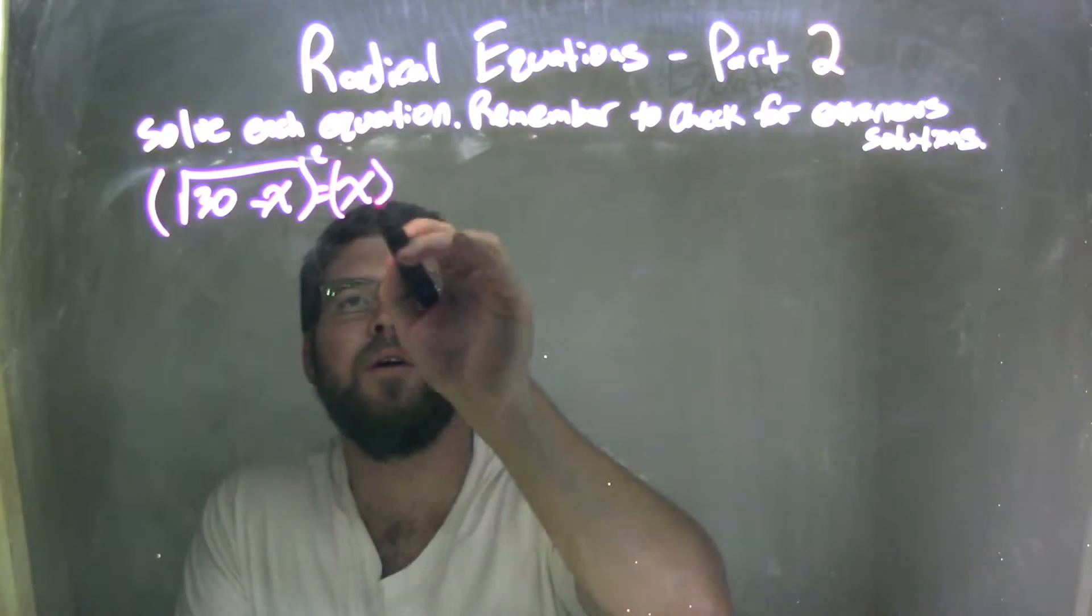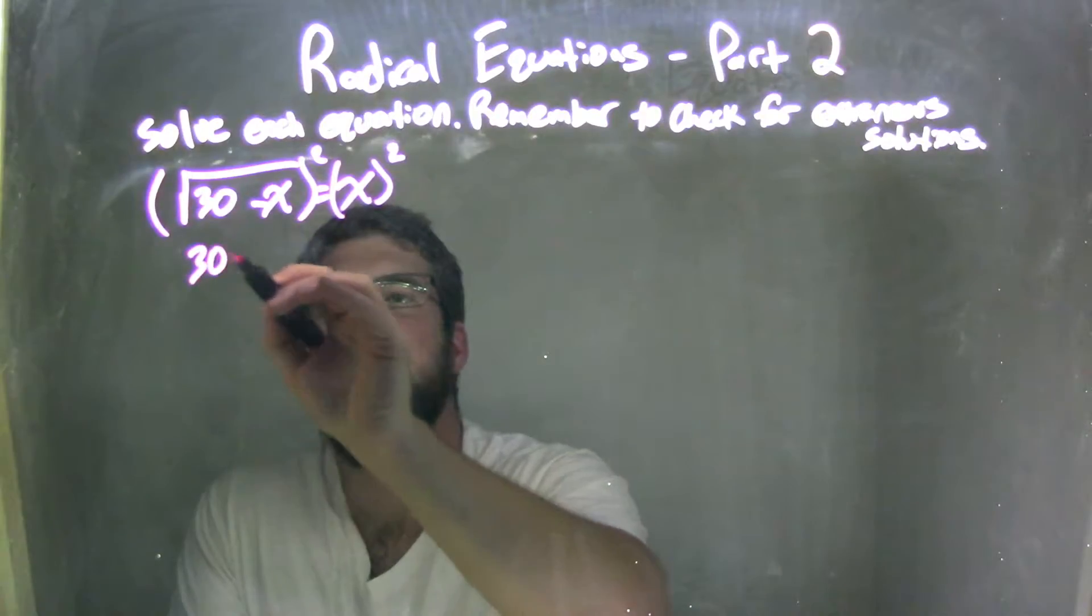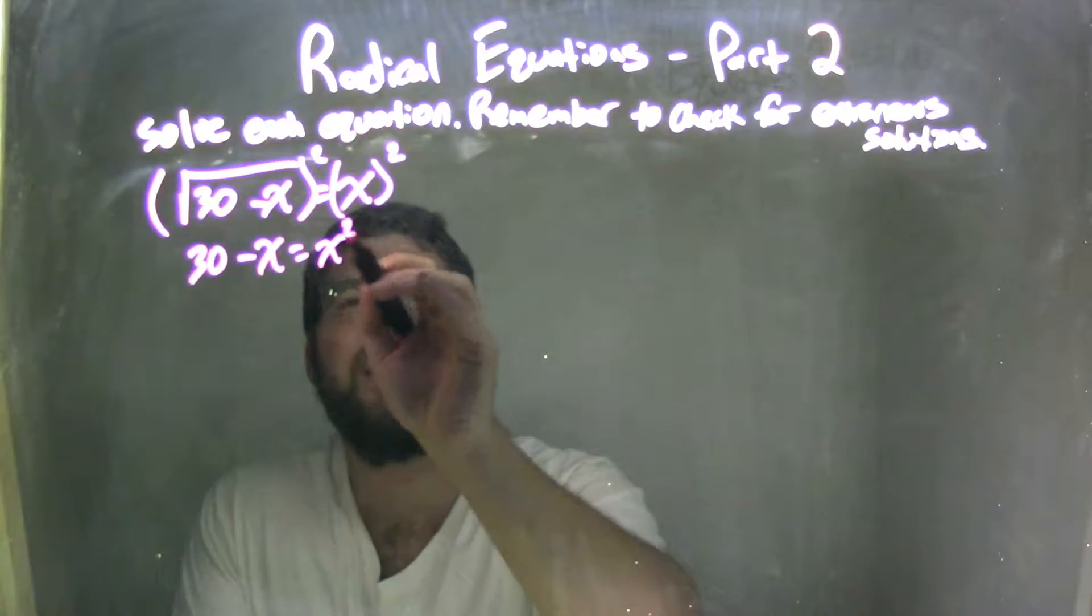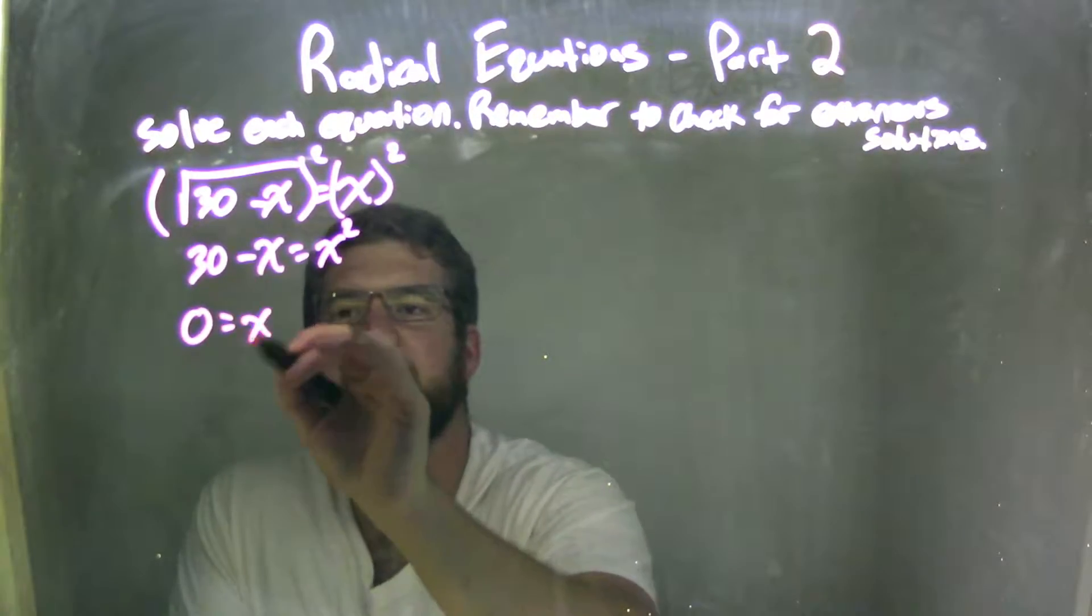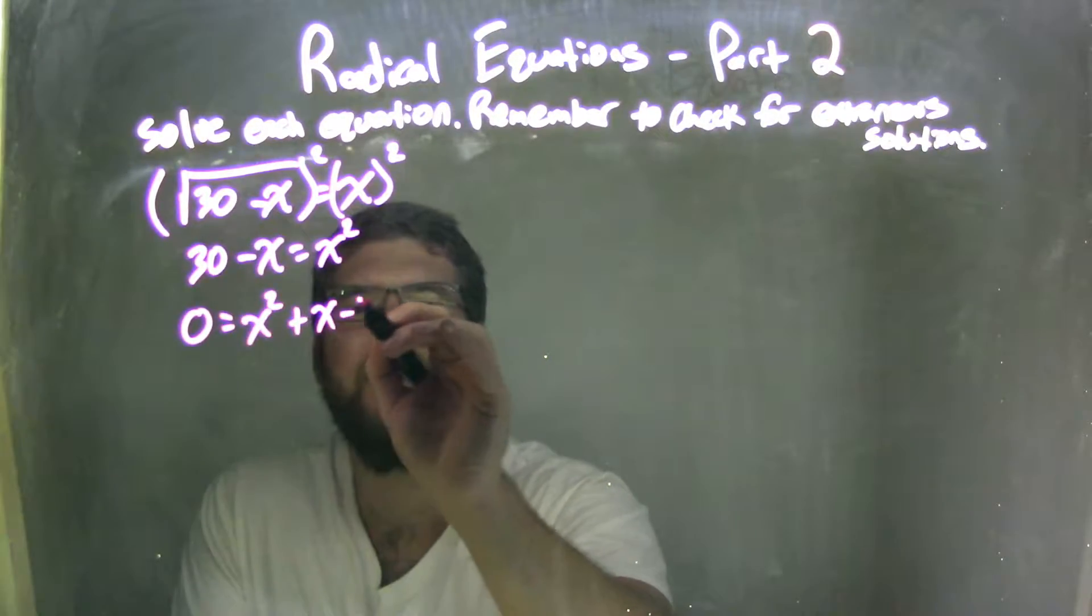So I'm going to square both sides here. I'm going to solve this, so I have 30 minus x equals x squared, and I'm going to bring everything over to one side. So I have zero equals x squared plus x minus 30.